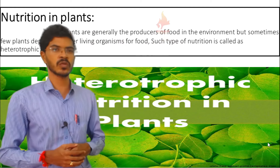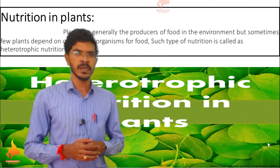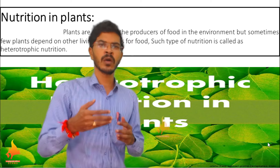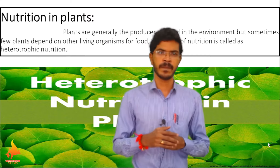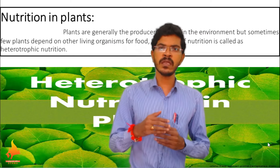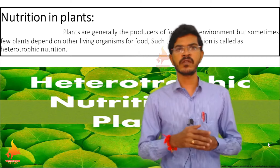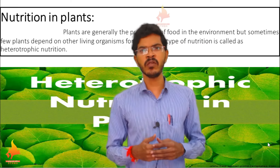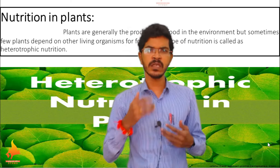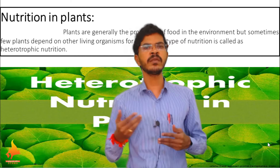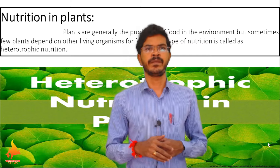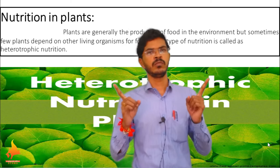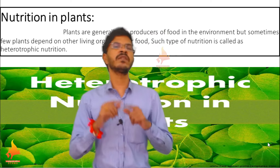We are going to discuss about heterotrophic nutrition in plants. There are two meanings for 'hetero' — it means 'other' or 'different,' and 'trophic' means food or nutrition. So the living organisms which depend on other living organisms for food are called heterotrophic organisms. But in the earlier video we already discussed that plants are autotrophic in nature — they can produce their own food. But how can they depend on other living organisms for food? Does all plants depend on other living organisms for food? No. There are few plants which depend on other living organisms for food.